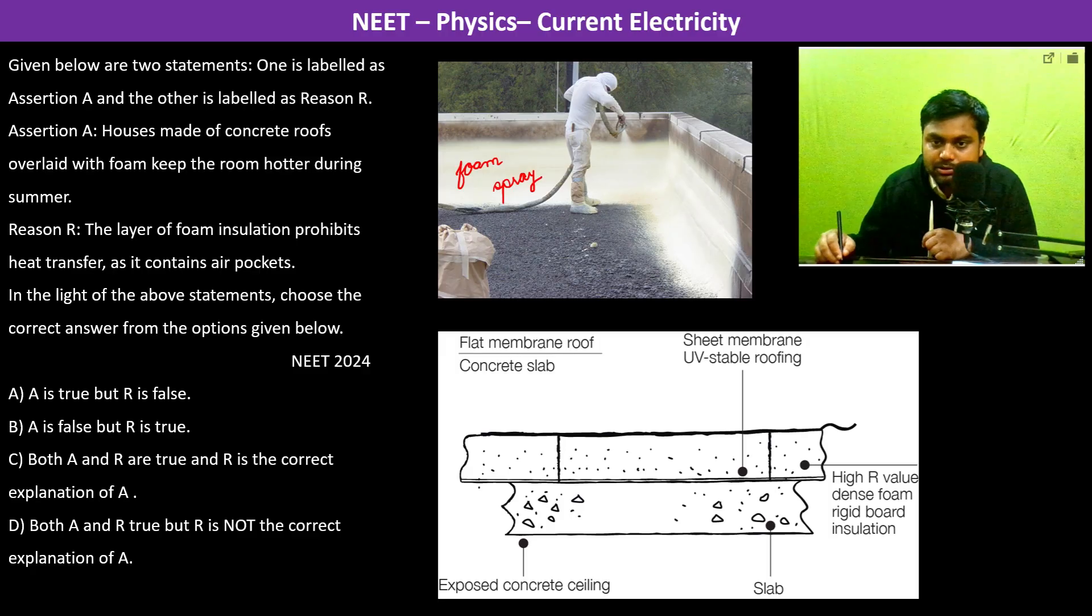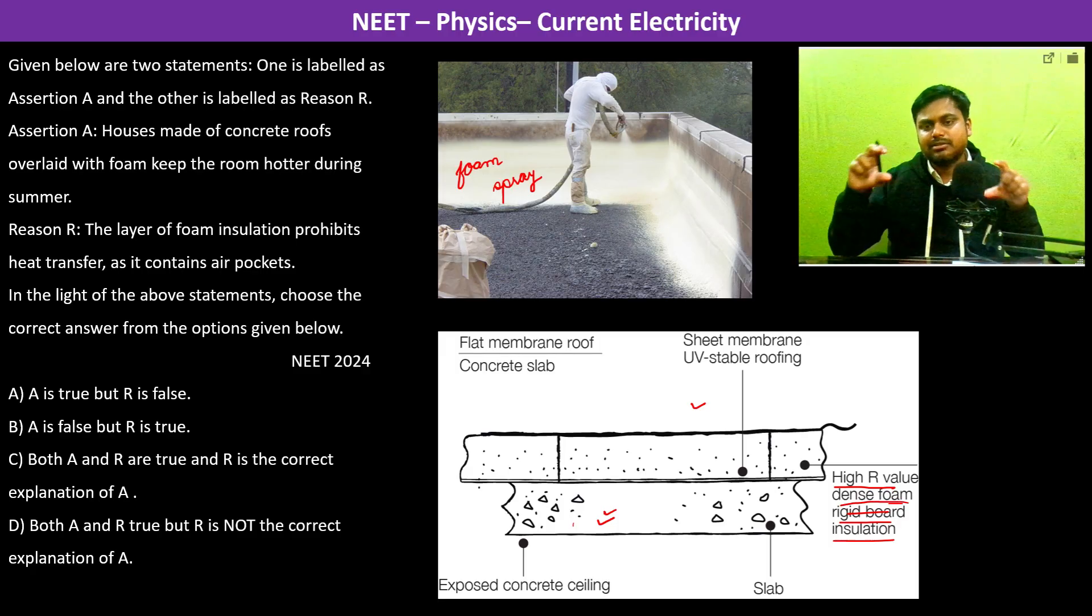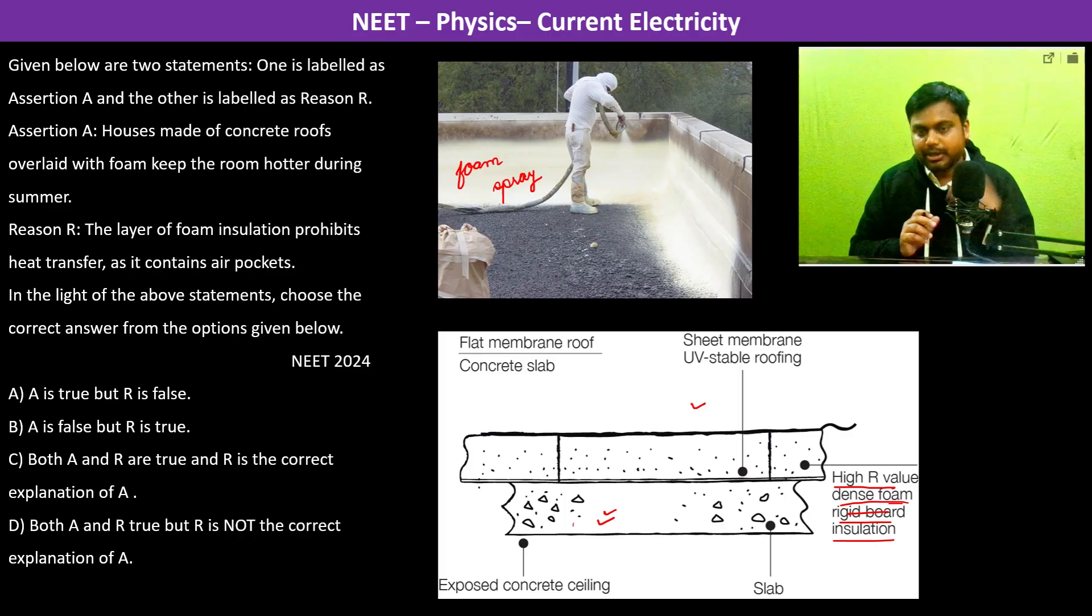And here also we can see that this is concrete roof and over that you see there is high R-value dense foam rigid body rigid board insulation. Basically there is dense foam above it.